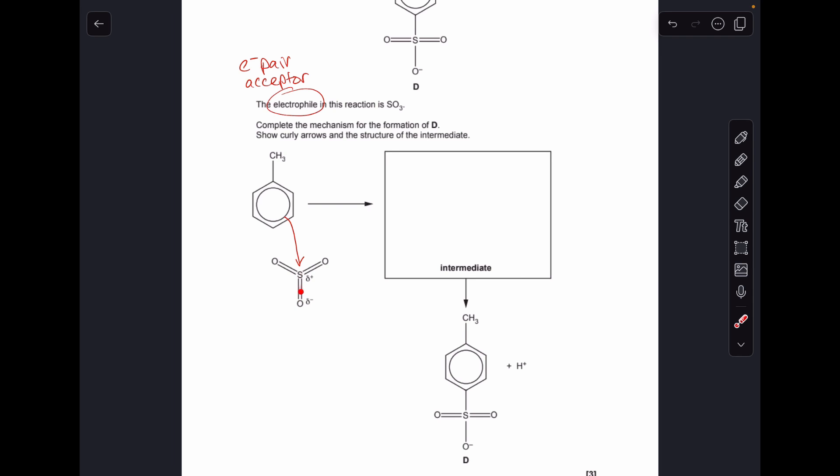So what's happening there is the pair of electrons or a pair of electrons in the SO double bond has been repelled completely onto that oxygen. So you can see I've drawn up the intermediate there.